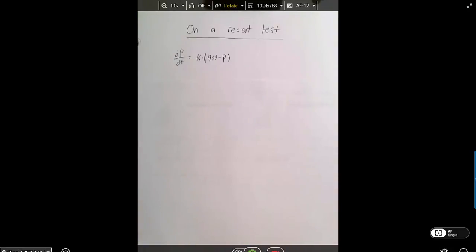On a recent test, we had a problem about a wolf population, and I said that the population of wolves, the rate of change of the population is proportional to 900 minus the population, and so you wrote a differential equation like this. And some of you solved it, and some of you didn't, and I gave you some information. I said that at times zero, there were 500, and that some number of years later, there was a different number.